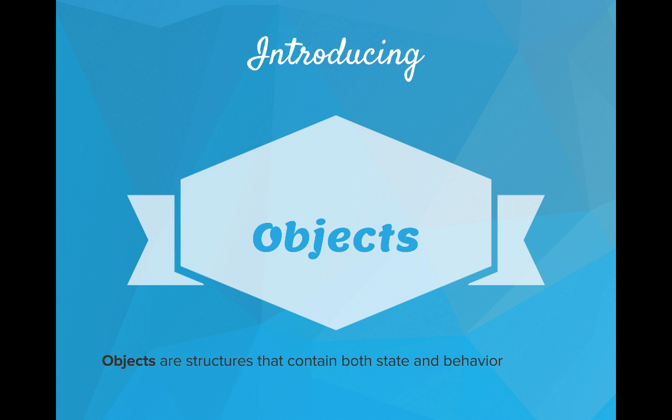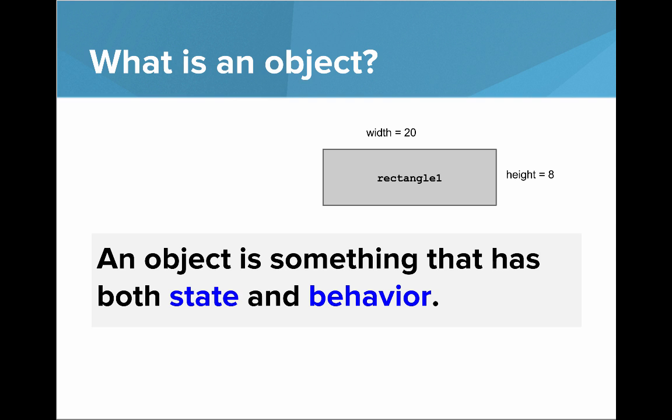So introducing objects. What's an object? An object is a structure that contains both state and behavior. An object is something that has both state and behavior.